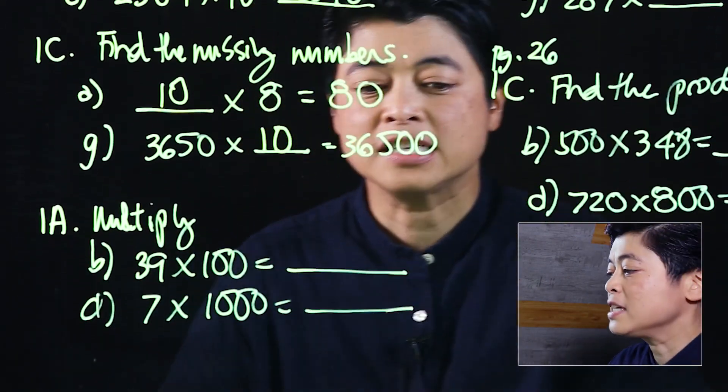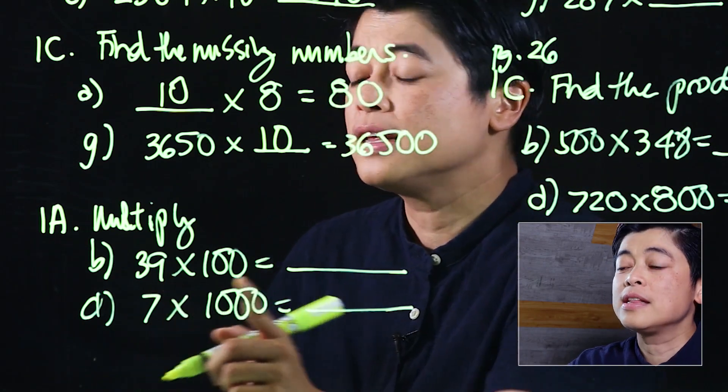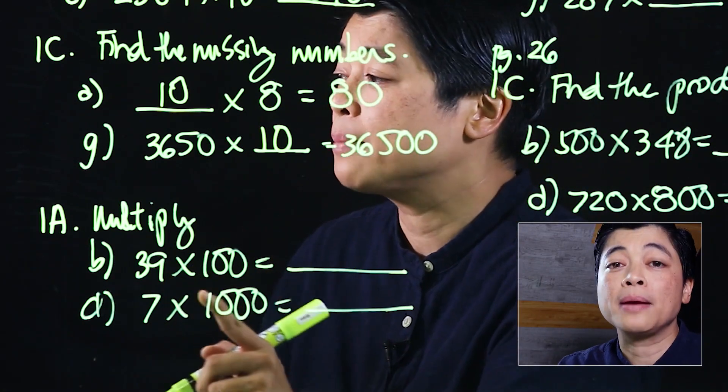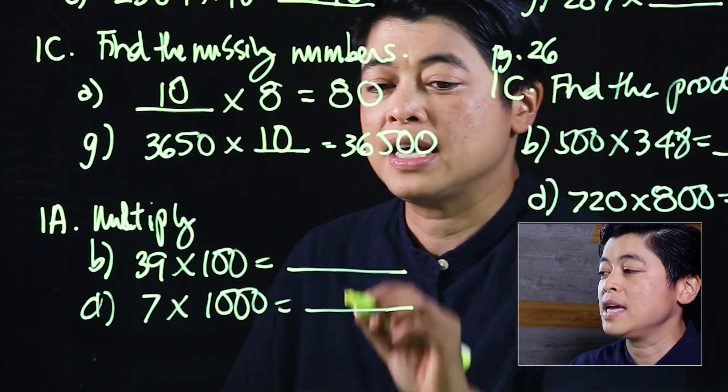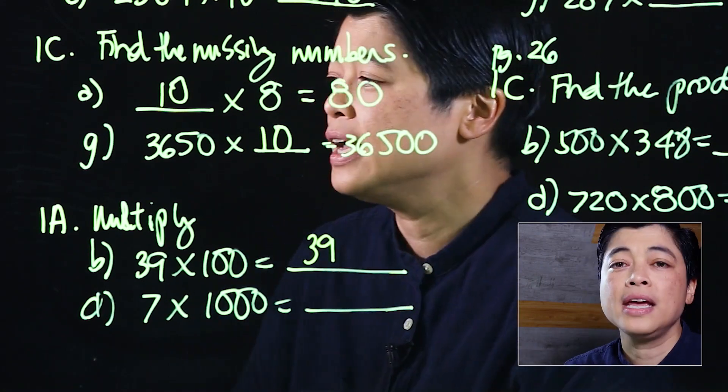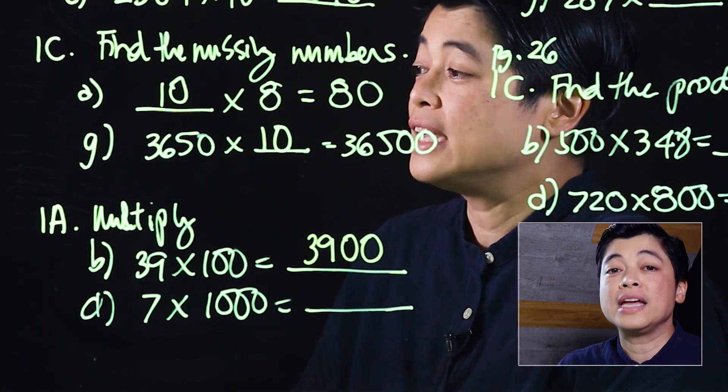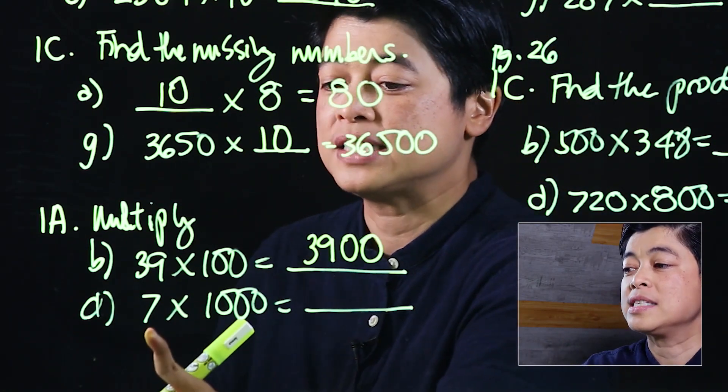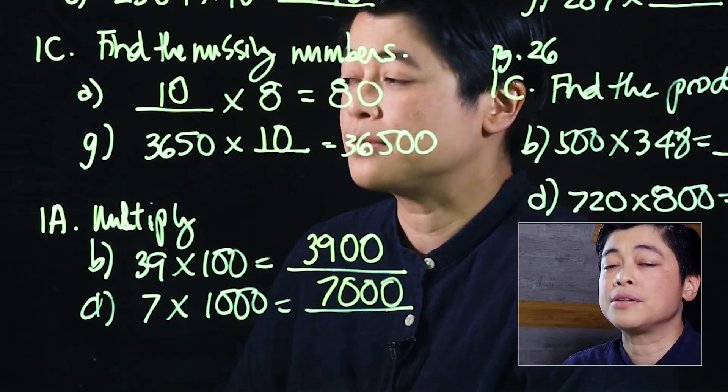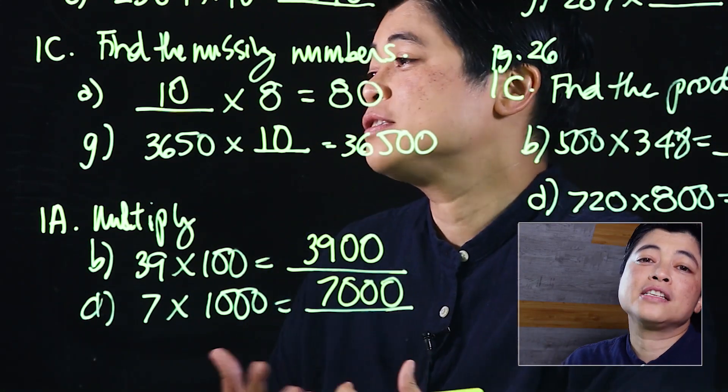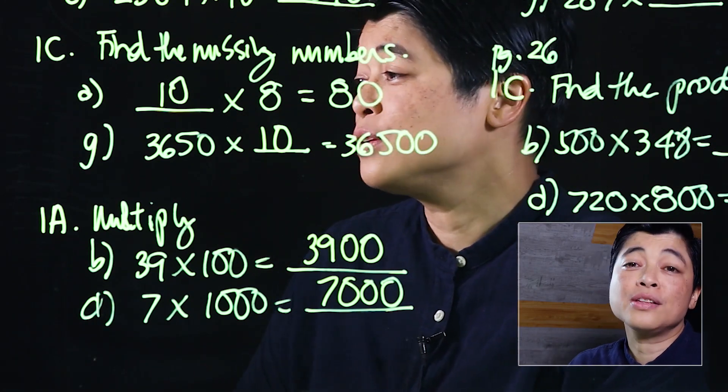On the next page, page 24, it says multiply. Here we're now multiplying by 100 and by 1000. Same thought process: we take the number 39, and since we're multiplying by 100, we add two zeros. Similarly, if we take 7 times 1000, that would be 7 with three zeros.